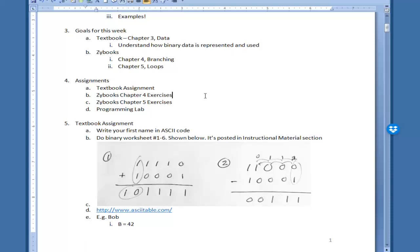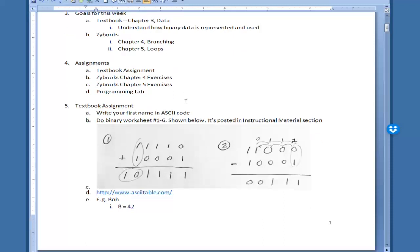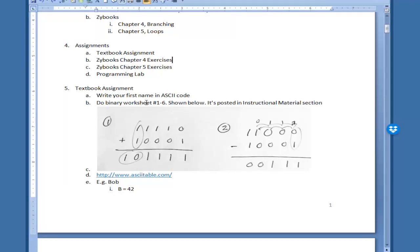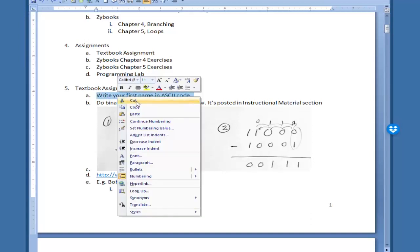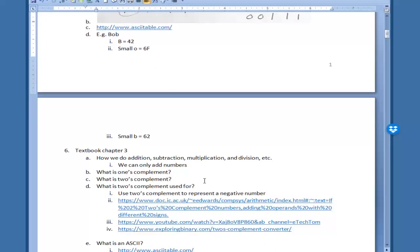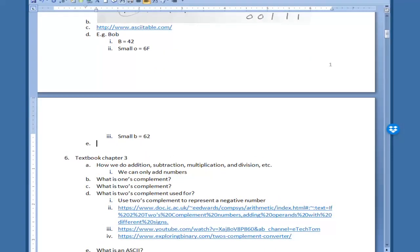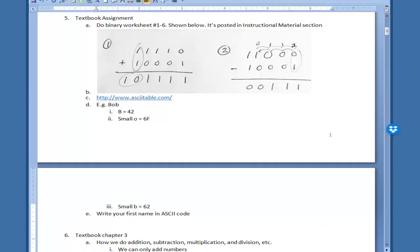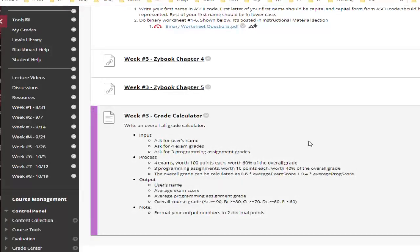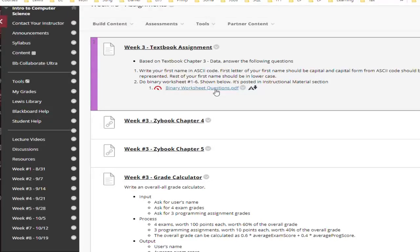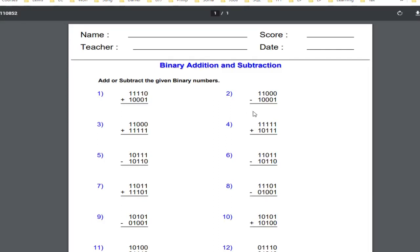As I mentioned in terms of the assignments, I'll go over them briefly. In terms of a textbook assignment, there are a few things I'd like you to do. The first one is do the binary worksheet. Here's the binary worksheet questions that I posted. I'd like you to do the first six. I'm going to do the first two here now and then you just need to do the other four.